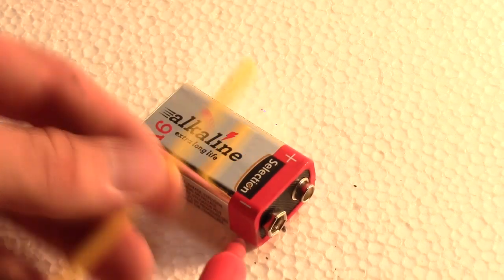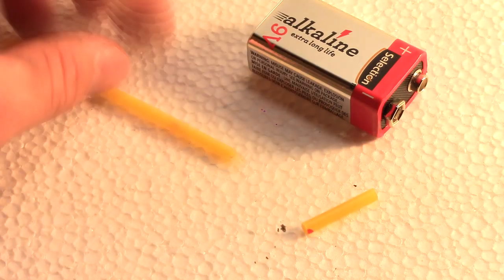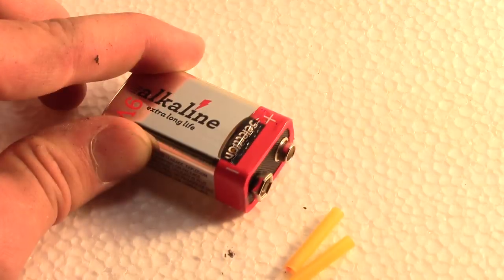Start by marking off and cutting two lengths of straw that align with the width of the 9-volt battery. Once they are cleanly cut you can now glue them firmly with hot glue across the body like so.